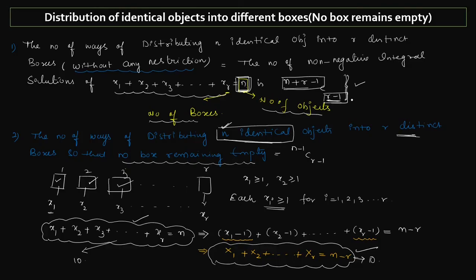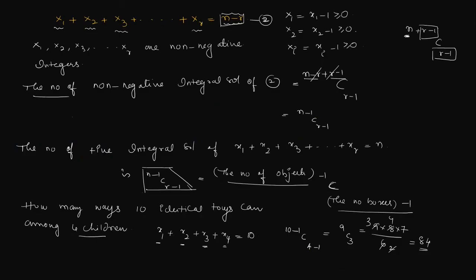So, whenever at least one object must be placed in each box, use the formula n-1 C r-1 with the restriction. If there is no restriction, use n+r-1 C r-1. Here we have two cases: distribution of identical objects into different boxes with no restriction, and with the restriction that each box contains at least one object. We will solve more problems using these concepts, and also see how to use generating functions for more advanced distribution problems in the next lesson. Thank you for watching.